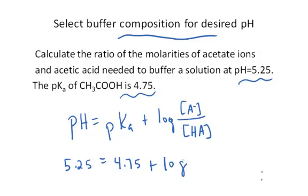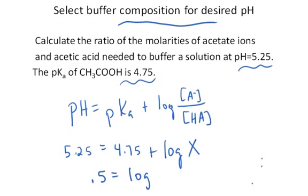then you just need to find the ratio of the anion of the acid to the acid. So we'll just call that ratio x. So you can subtract 4.75 from both sides of this equation and you'll end up with .5 equals log of x.